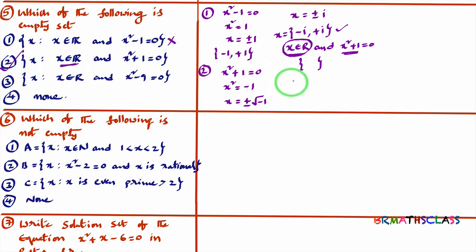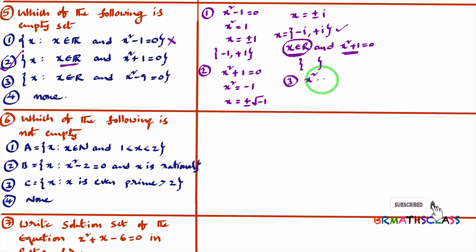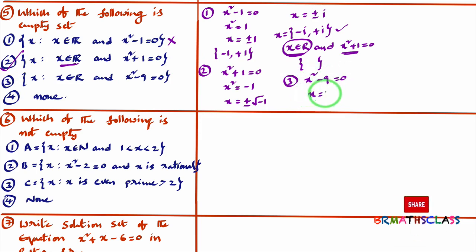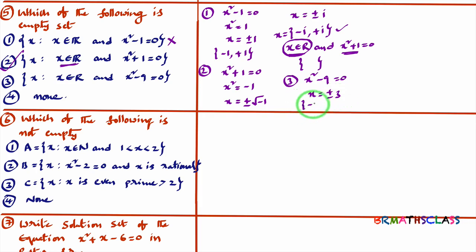We can also verify the third option: x² - 9 = 0 gives x = ±3. Both 3 and -3 are real numbers, so this set contains two elements and is not empty.